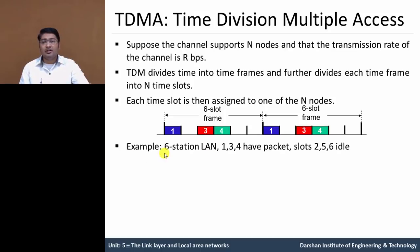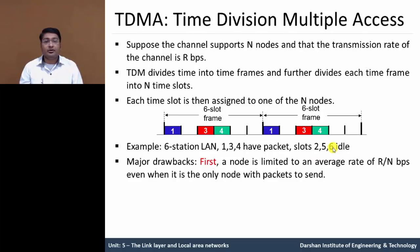In this figure, a LAN network of 6 nodes — 6 stations — is shown. Node numbers 1, 3, and 4 have packets, and slots 2, 5, and 6 are idle. Whenever a node has a packet to send, it transmits the packet bits during its assigned time slot in the revolving TDM frame. Typically, slot sizes are chosen so that a single packet can be transmitted during a slot time. This method is very attractive because it eliminates collisions and is perfectly fair — each node gets a dedicated transmission rate of R/N bits per second during each time frame.